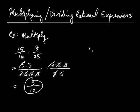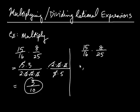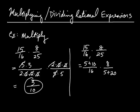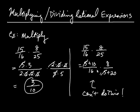I also want to point out that you can't take 15 over 16 times 8 over 25 and split 15 as 5 plus 10, and 25 as 5 plus 20, and then try to cancel those 5s. It's true that 15 is 5 plus 10 and 25 is 5 plus 20, but you can't cross off those 5s because you can't cancel when you have addition. Whenever you have addition or subtraction, you can't cancel — it's only when you have multiplication. That's important because it reminds you that you have to factor the numerators and denominators.